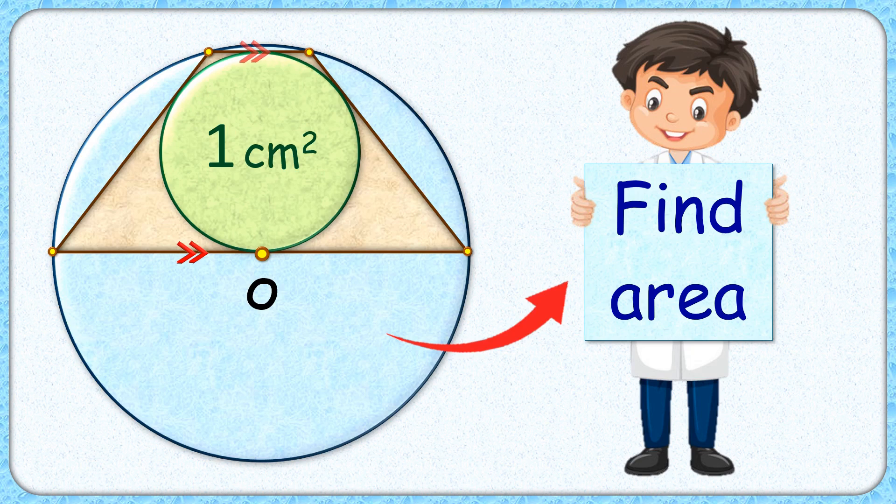Welcome everyone. This interesting question given to us is a bicentric trapezium that has a circumcircle and a green incircle. Given is the area of this incircle, that's one centimeter square, and it's passing through the center of the circumcircle. The exciting part is with this limited data we have to find the area of the circumcircle.